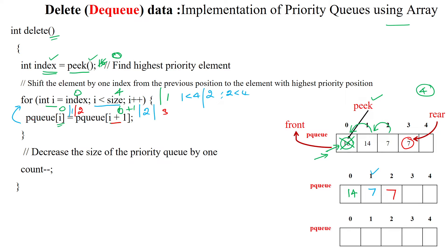i is incremented to three; since three is less than four, we try to assign the fourth index value. However, the fourth index is empty — there is no data — so nothing meaningful is returned into index three.